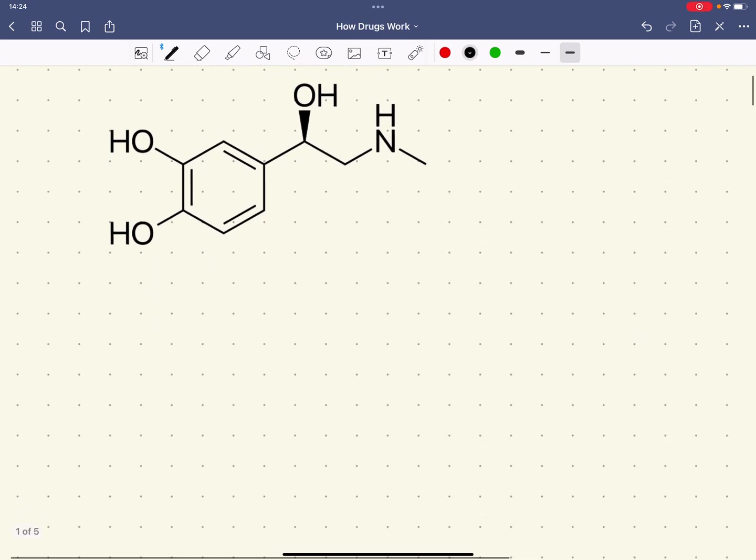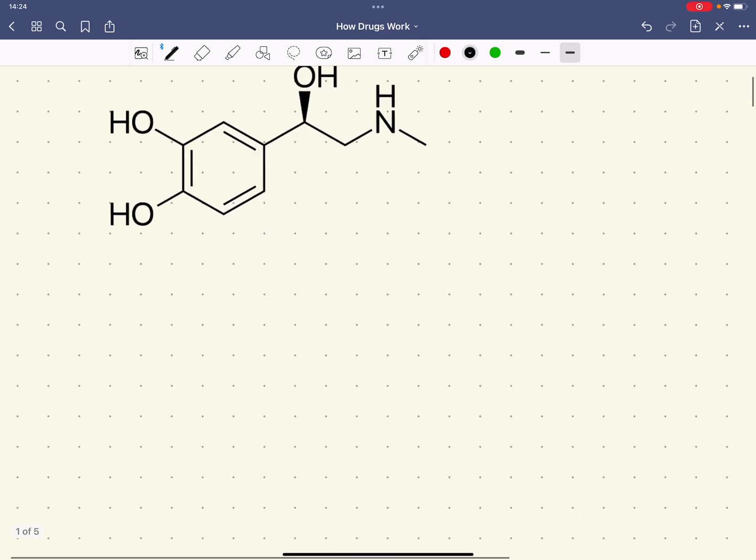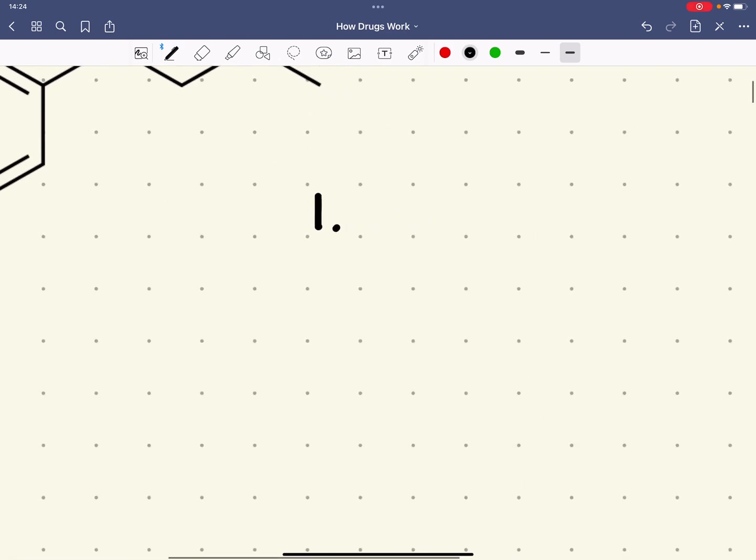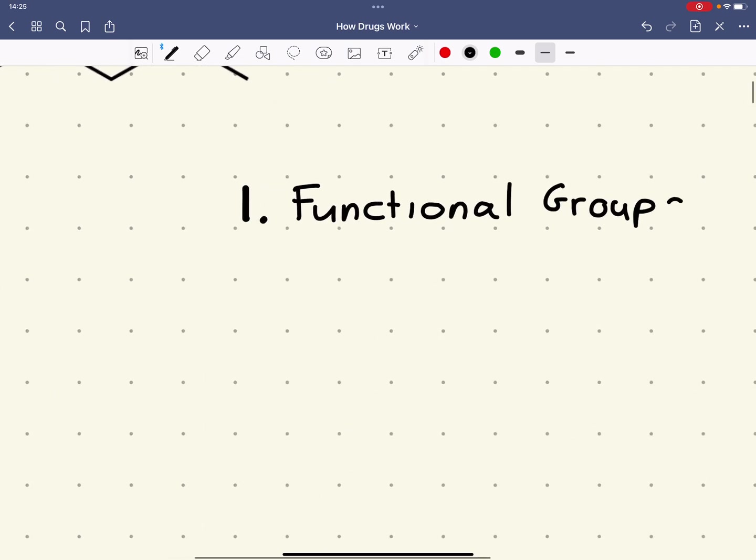The key factors we're going to look at are, firstly, one, we're going to look at the functional groups in the molecule. We've got to be able to look at a molecule and recognize the functional groups that are present.